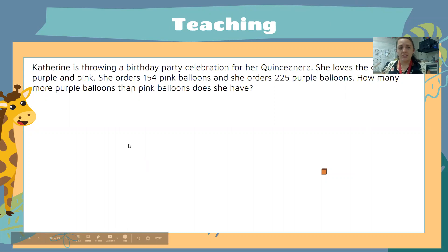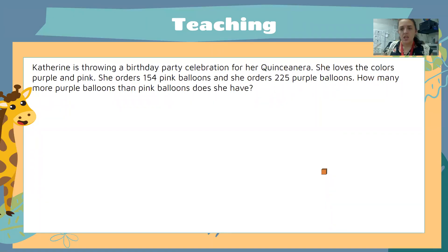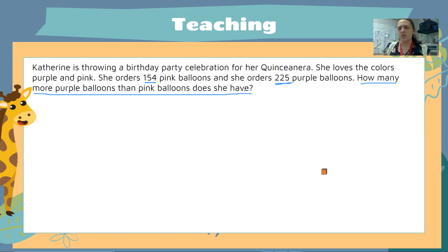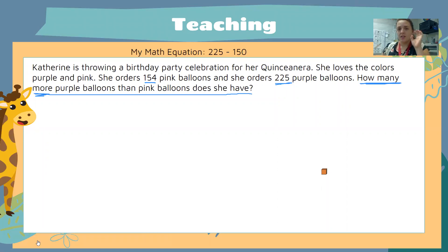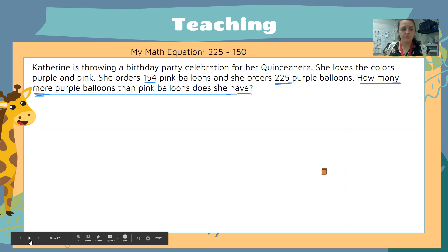Put your pencil down and just watch. Catherine is throwing a birthday party celebration for her quinceañera — she loves the colors purple and pink. She orders 154 pink balloons and 225 purple balloons. How many more purple balloons than pink balloons does she have? I see the keywords 'how many more,' so I know I need to subtract. My equation is going to be my bigger number minus my smaller number: 225 minus 154.